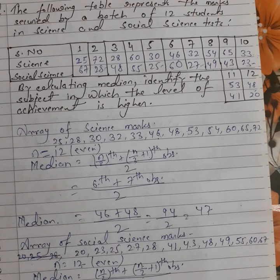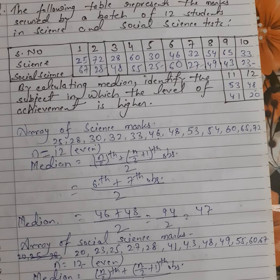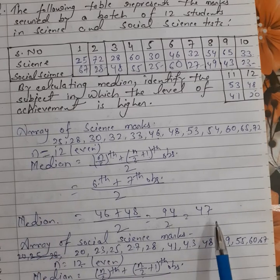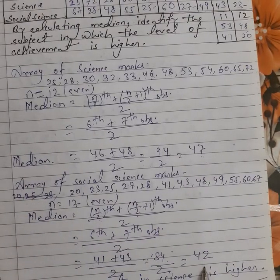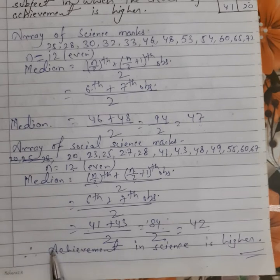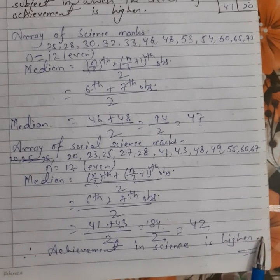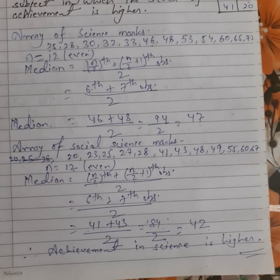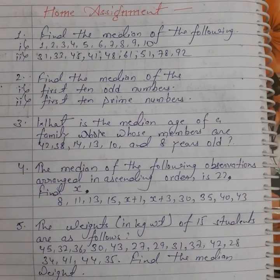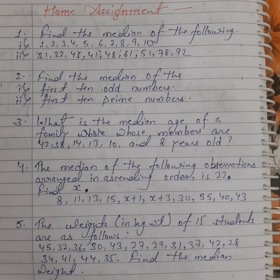To summarize: a table was given with marks of science and social science for 12 students. We found the median of each subject — science median is 47 and social science median is 42. Since 47 is greater than 42, achievement in science is higher than in social science. Higher median means higher achievement. That's all for today — note down your homework. Thank you and have a nice day.